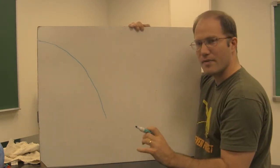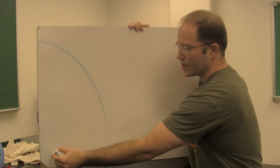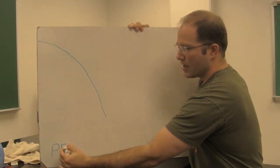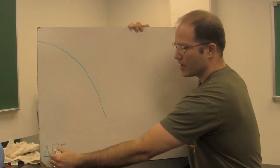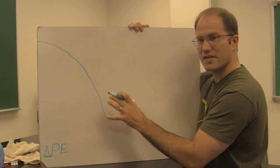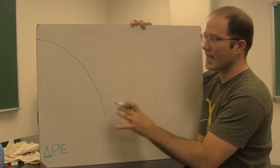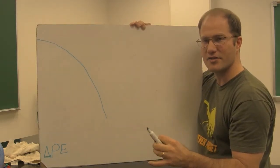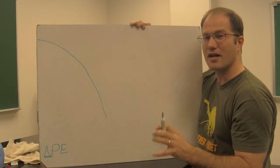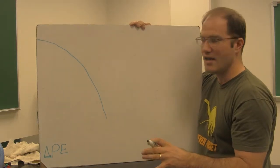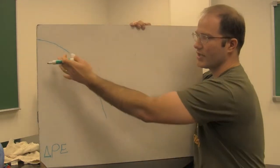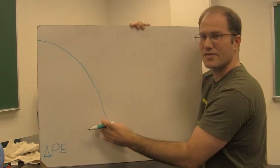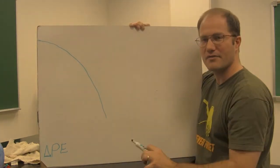If we were to plot the potential energy of the ball — the change in potential energy — it would look just like this, with this same shape, because potential energy is mgh, where m and g are constants. So it would look just like h versus time, or position versus time, scaled by a factor of mg.